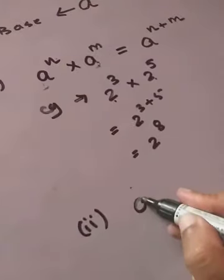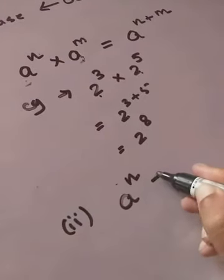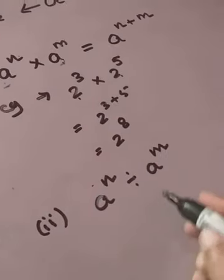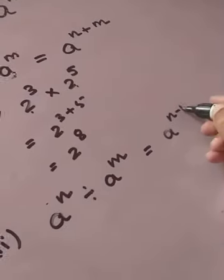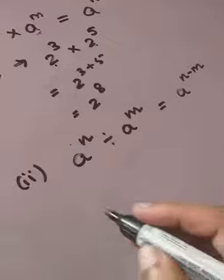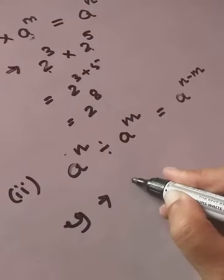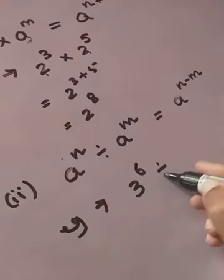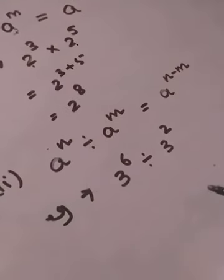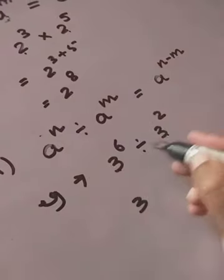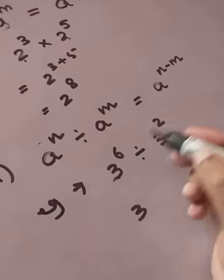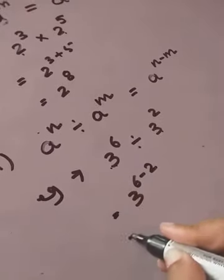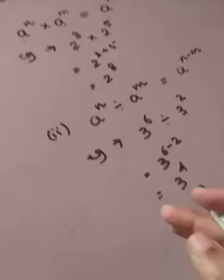The next law: when the bases are same, in case of division, we subtract the powers. Example: three to the power six divided by three to the power two. The base is the same and there's a division sign, so we subtract the powers. The answer is three to the power four.